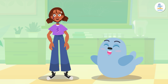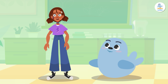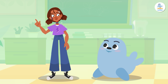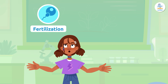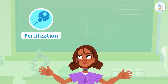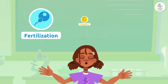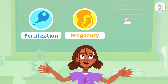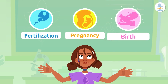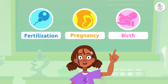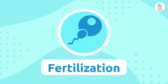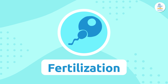To understand this, we need to talk about the three stages of human reproduction: fertilization, pregnancy, and birth. Let me tell you about all of them. Fertilization.